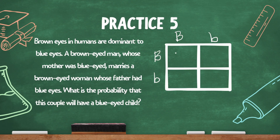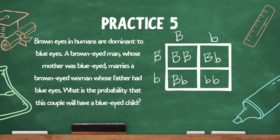Let's complete the Punnett square for them: big B, big B; big B, little b; big B, little b; and little b, little b. What is the probability that this couple will have a blue-eyed child? Blue eyes are recessive. There's only one out of four outcomes with little b, little b. So the probability is one-fourth, or 25%.